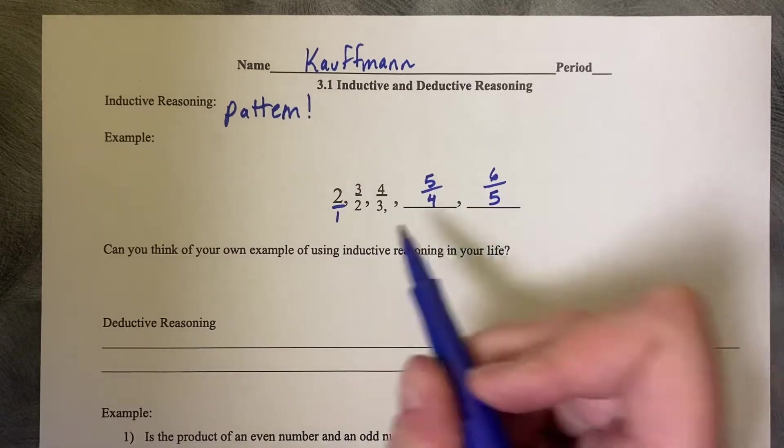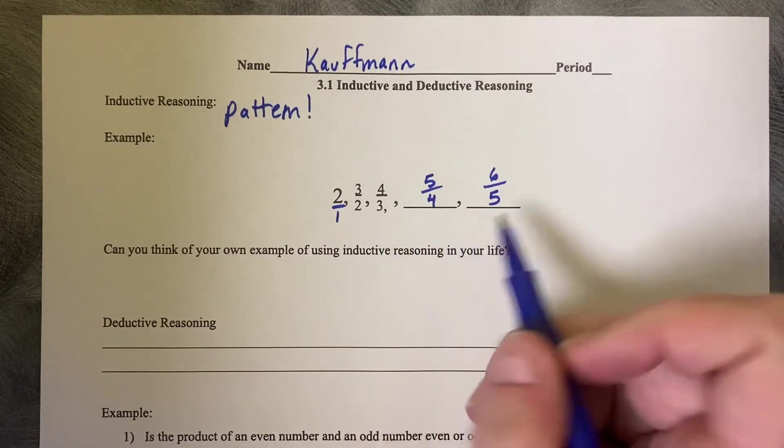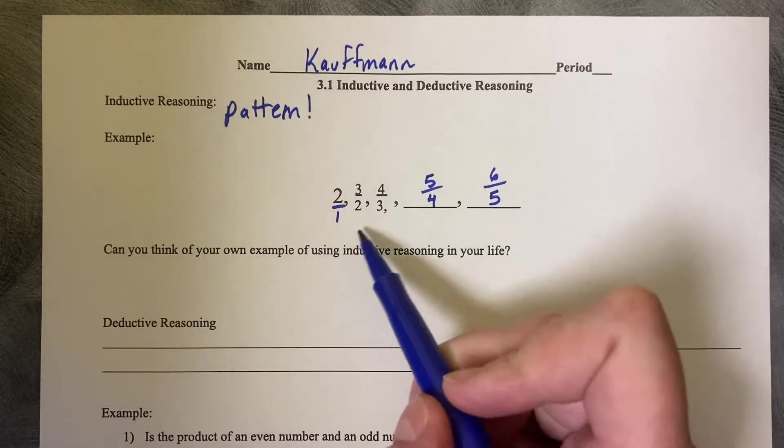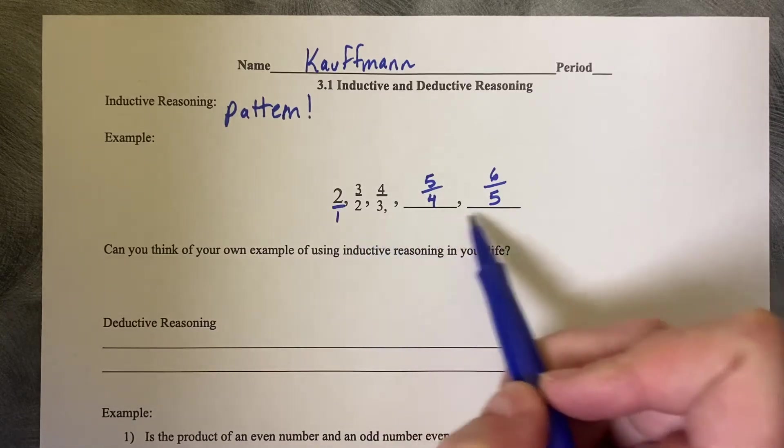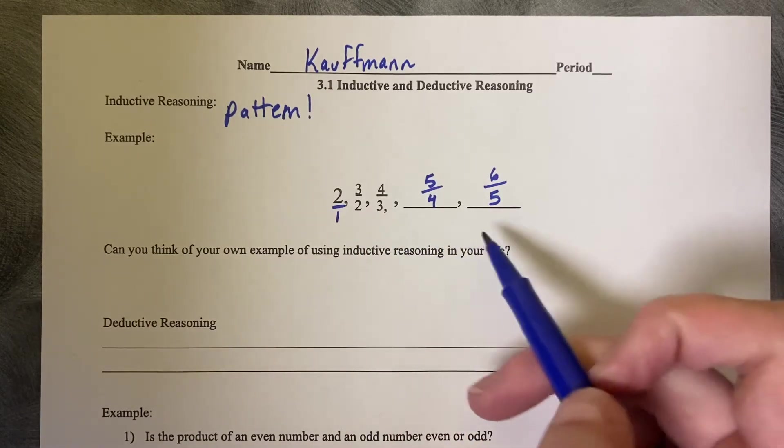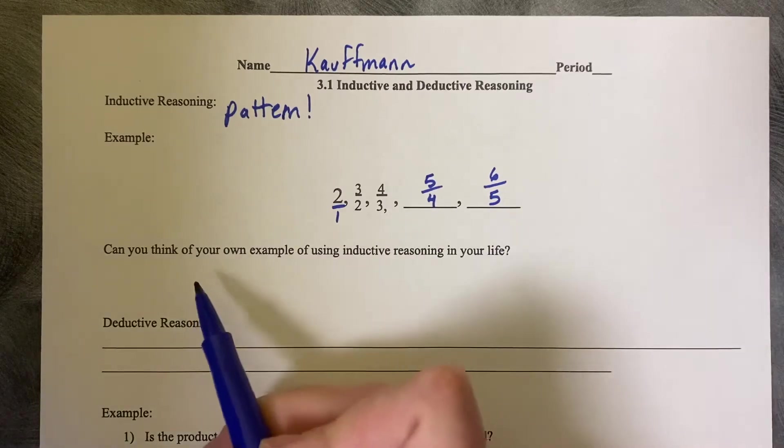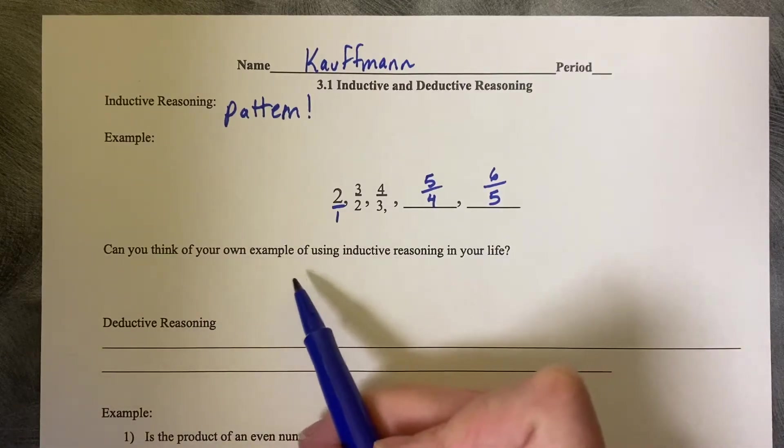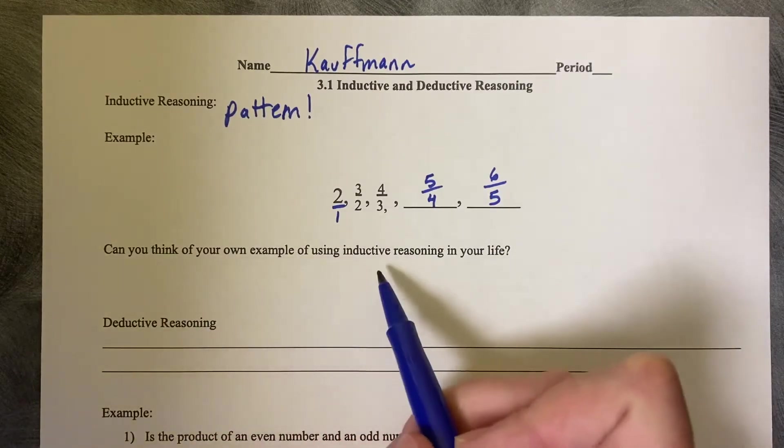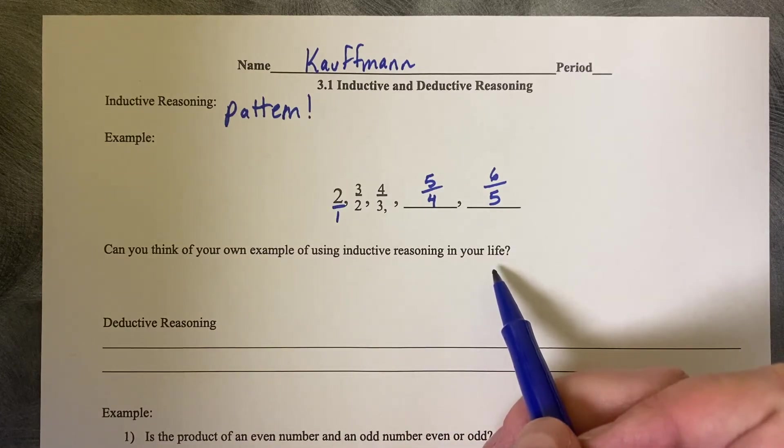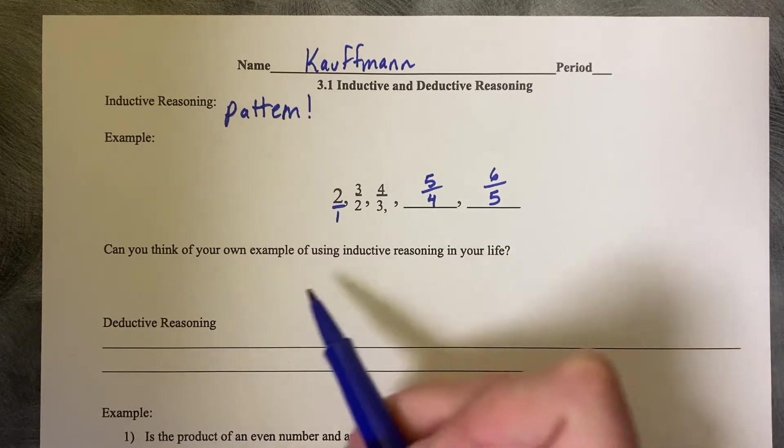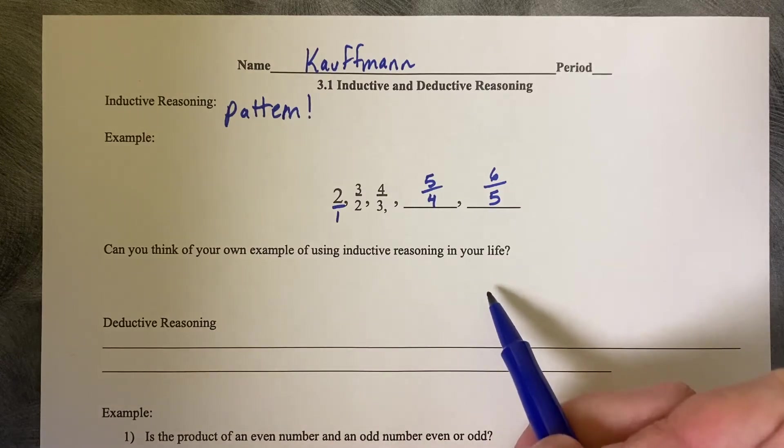Now, we didn't ask to write an equation for this. It's just a pattern. We could see that there was something happening in the first three terms, and we could continue that pattern in the second two terms. Can you think of your own example of using inductive reasoning in your life? So take a moment, pause this video, and give an example of a time where you used a pattern in your own life.